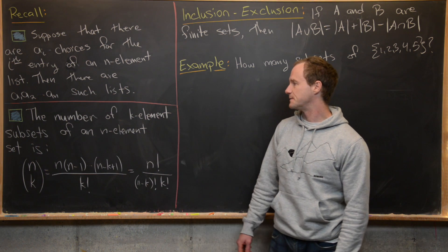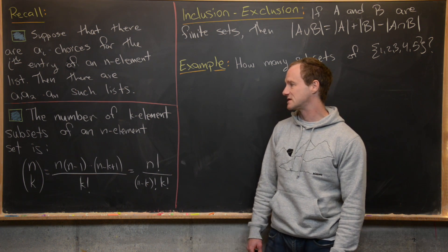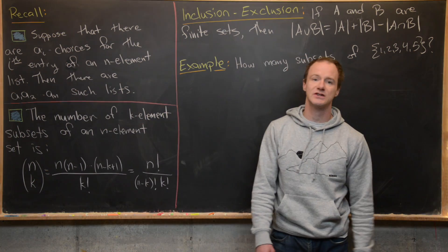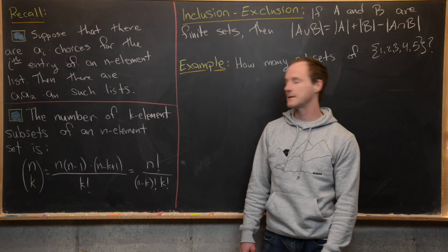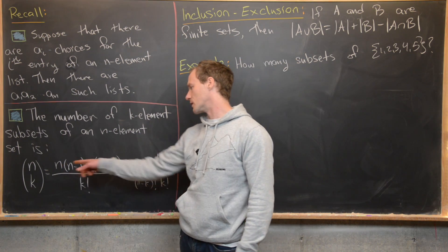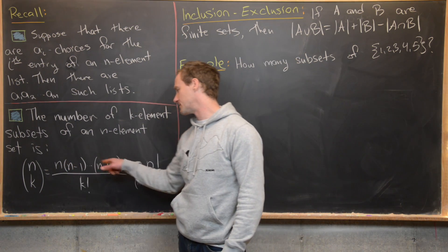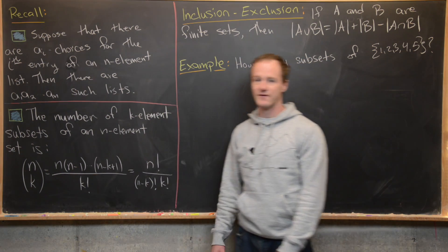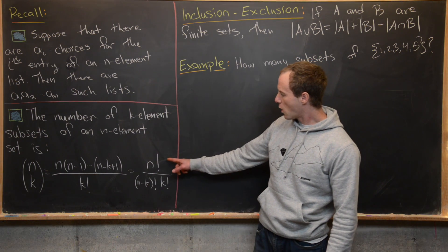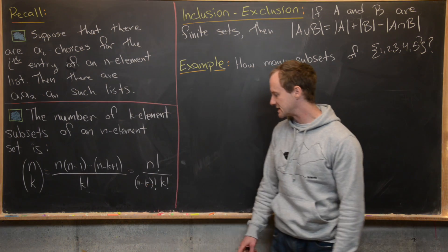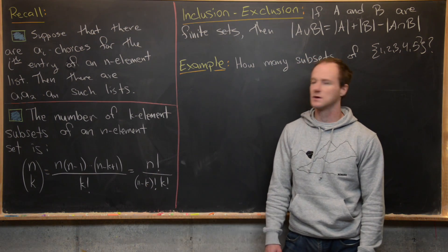The number of k-element subsets of an n-element set is the binomial coefficient n choose k, which is the descending product of k terms in the numerator — n times n minus 1 all the way down to n minus k plus 1 — over k factorial. Or equivalently, n factorial over (n minus k) factorial times k factorial.